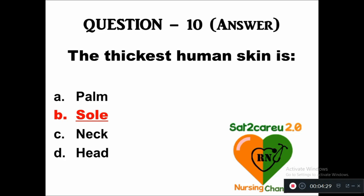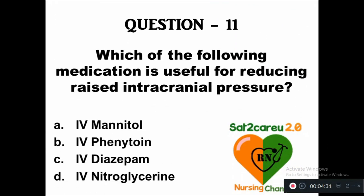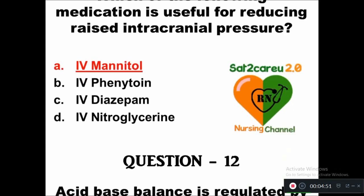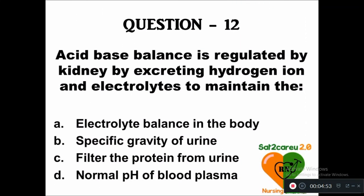Question 11: Which medication is useful for reducing increased intracranial pressure — option A: IV mannitol, B: IV phenytoin, C: IV diazepam, D: IV nitroglycerin. The right answer is IV mannitol. Question 12: Acid-base balance is regulated by the kidney by excreting hydrogen ion and electrolytes to maintain the —